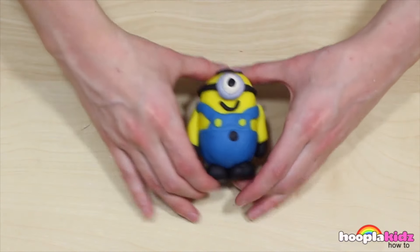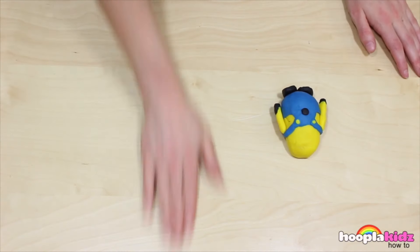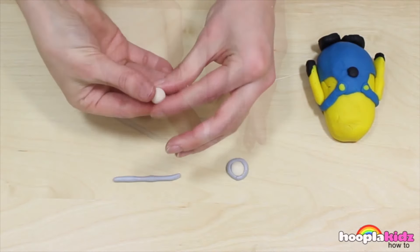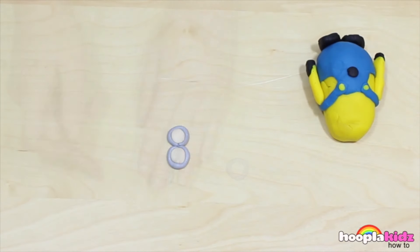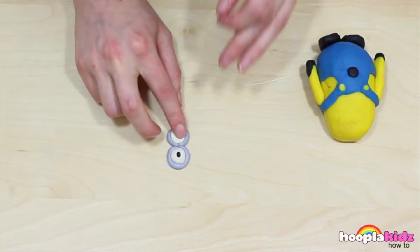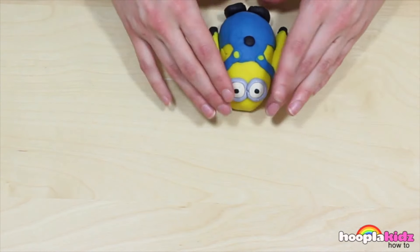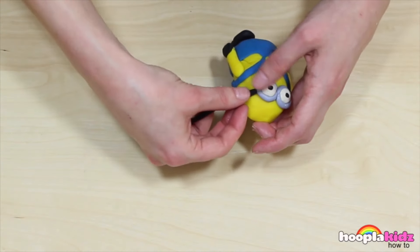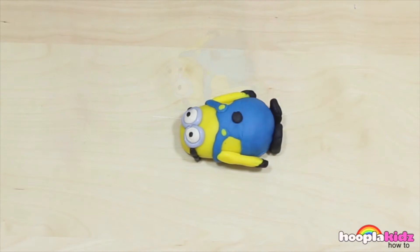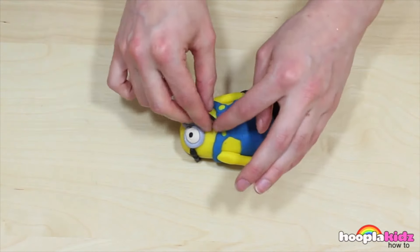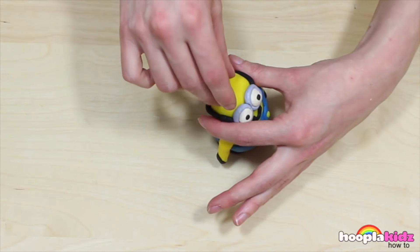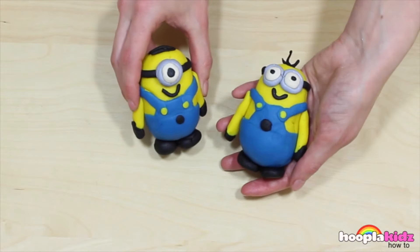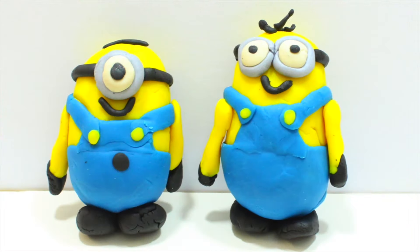This Minion's only got one eye. Look! It's Stuart! For my second Minion, I'm going to make Tim. So this Minion's going to have two eyes. We're going to use exactly the same process as we did before, but twice. We're even going to use the same process to add a black strap around the head. And of course, a smile and some hair. And there you have it, two different Minions, but you can make loads! And there you have it, Minion Play-Doh. Super cute!